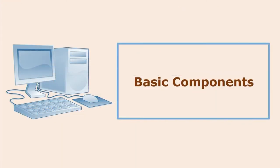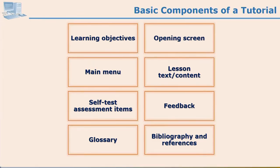Let us see the basic components of tutorial mode of CAI. The basic components of a tutorial are: learning objectives, an opening screen, a main menu, lessons in the form of text, content, graphics, and animations. There are self-tests, that is assessment items, and feedback on those assessments. There can be a glossary attached in a tutorial mode, and there is generally a bibliography and references provided.